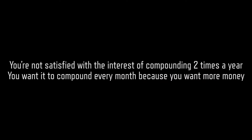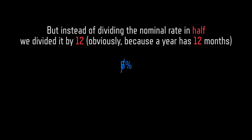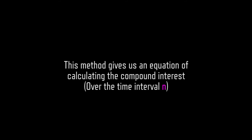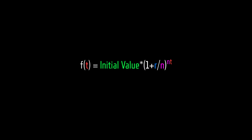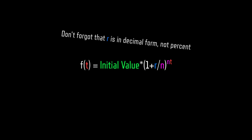You are not satisfied with compounding 2 times a year — you want it to compound every month because you want more money. In order to calculate the effective rate, we do the same process, but instead of dividing the nominal rate in half, we divide it by 12, because the year has 12 months. Add 1 to it, making it the growth factor, and raise it to the 12th power. This gives us the general compound interest equation: f(t) = initial value times (1 + r/n) to the power of nt.